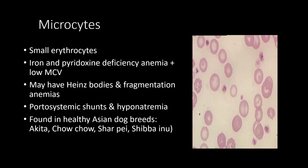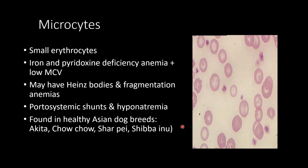Microcytes are smaller erythrocytes that usually appear when there is iron and pyridoxine deficiency. Because they are smaller, the mean corpuscular volume is lower. They may have Heinz bodies and other fragmentation. They are usually seen in portosystemic shunts and cases of hyponatremia, but are normally found in healthy Asian breeds such as Akita, Chow Chow, Shar-Pei, and Shiba.